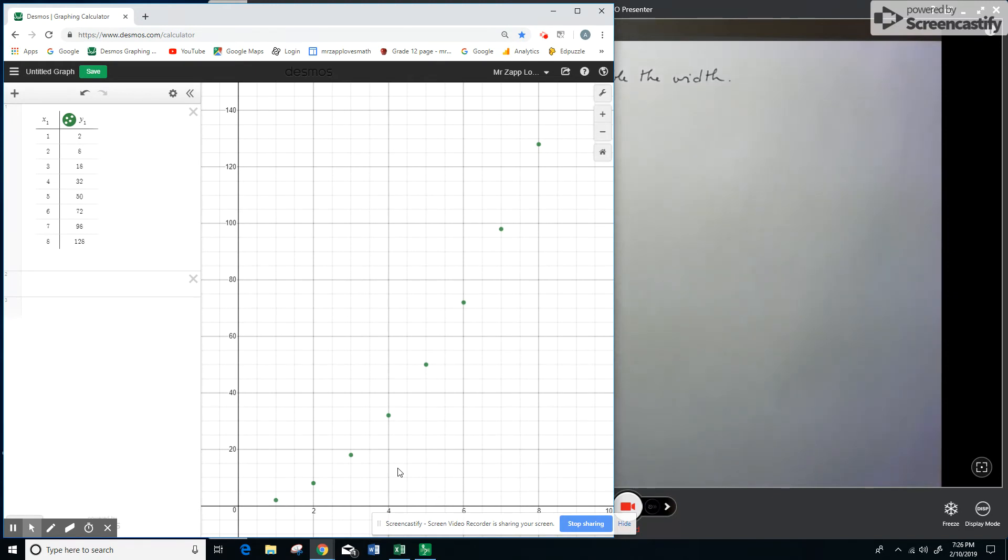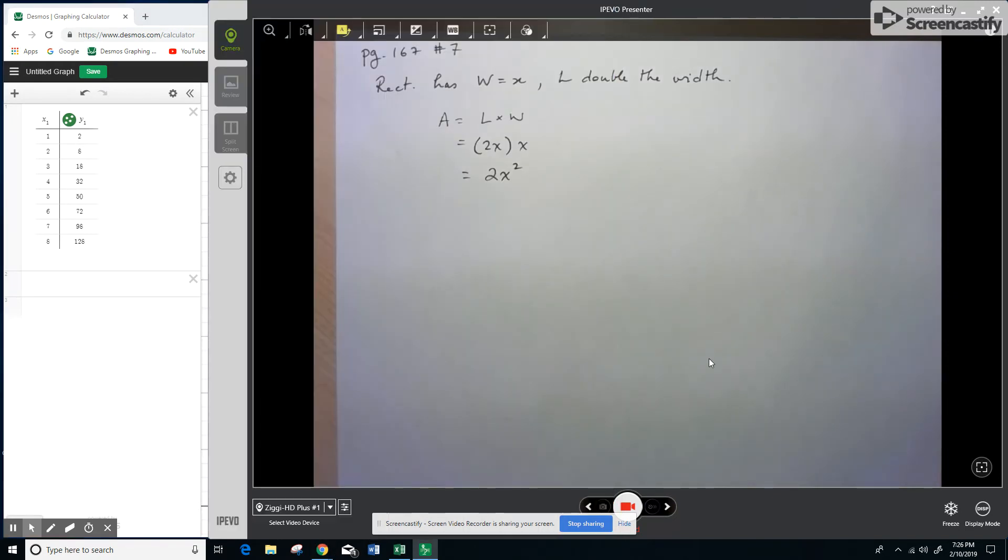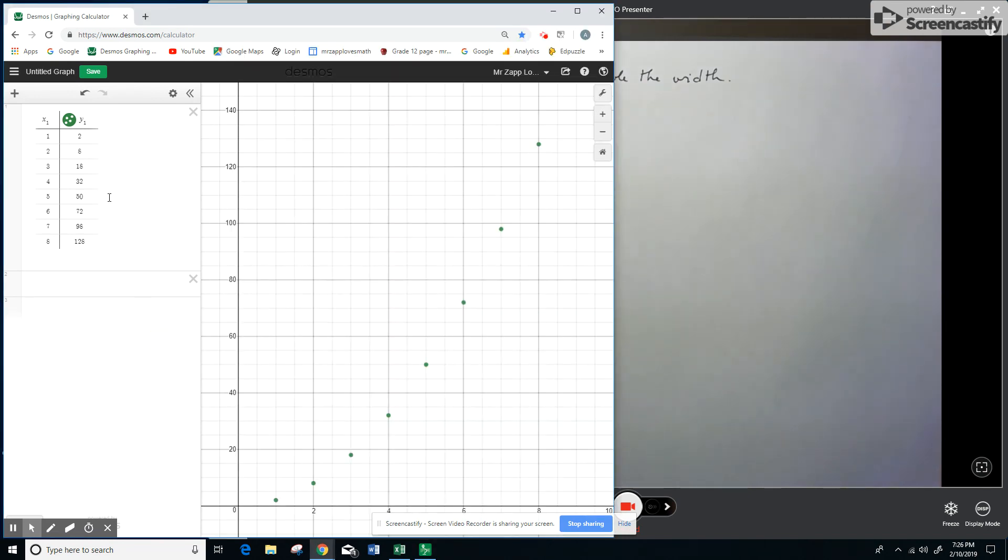So this answers all the questions. A couple of things: if at all possible, always try to write an analytic representation of your scenario. And when we're studying relations or functions, we can always have these three perspectives: the analytic, the numerical, and the graphical. Okay, that's it for this one.